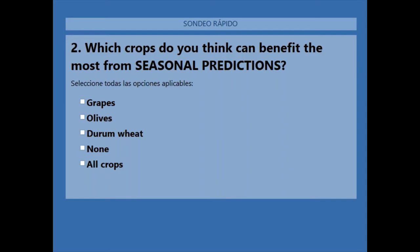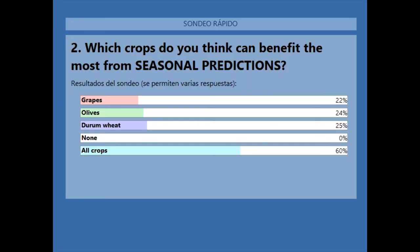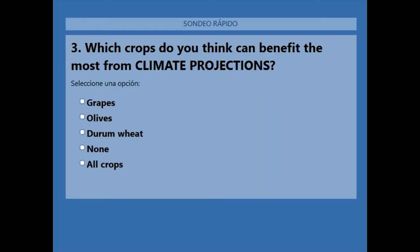We now have more than 80% of our audience that has voted. I will close the poll and share the results: 60% of people who participated think the answer is all crops. If we look at the individual crops — grapes, olives, durum wheat — those who chose individual crops have very similar percentages. Now we have a second question: the same question but for climate projections instead of seasonal predictions — these long-term projections for the next 30 to 40 years until the end of the century. For which crops would these predictions be most useful? The options are the same: grapes, olives, durum wheat, none, and all crops.